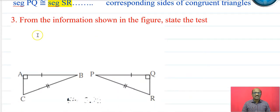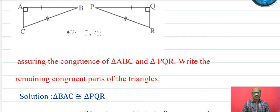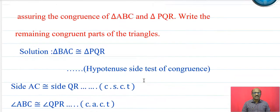From the information shown in the figure, state the test. These two are right angle triangles. In triangle ABC and triangle PQR, side AB is congruent to side PQ, and hypotenuse BC is congruent to hypotenuse PR. Therefore these two triangles are congruent by the hypotenuse-side test.